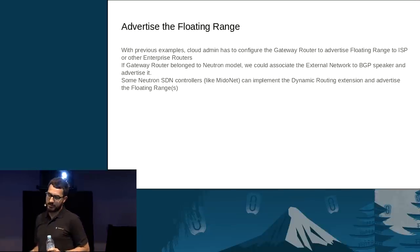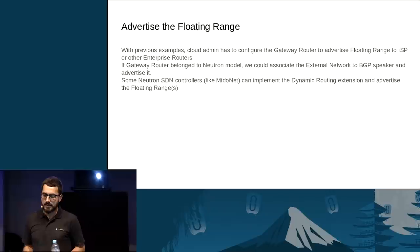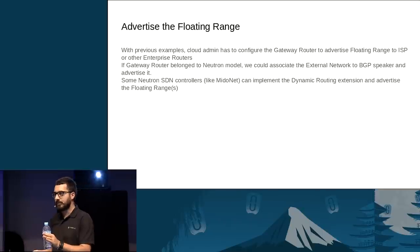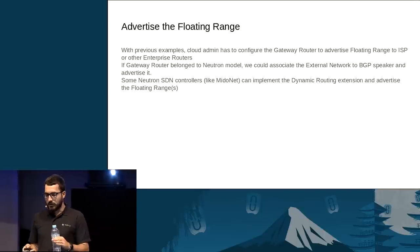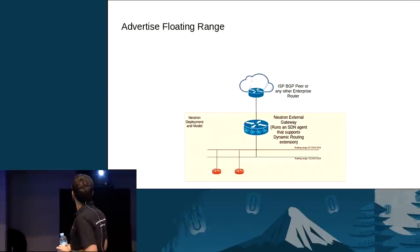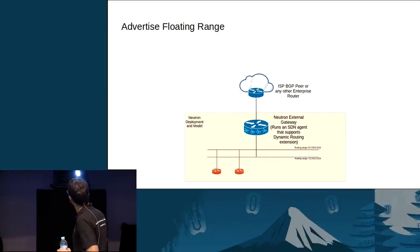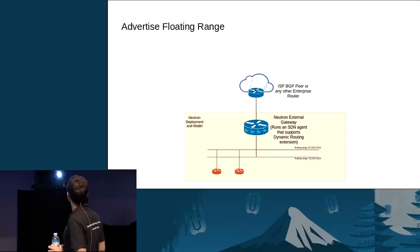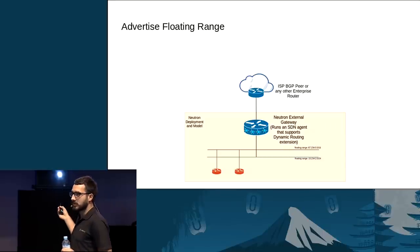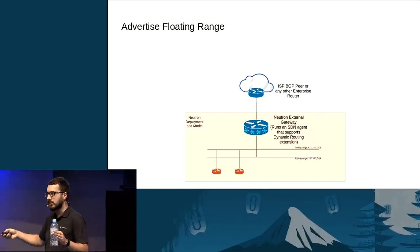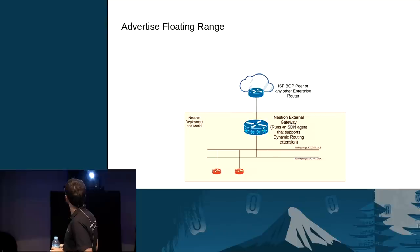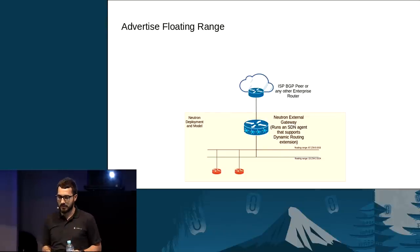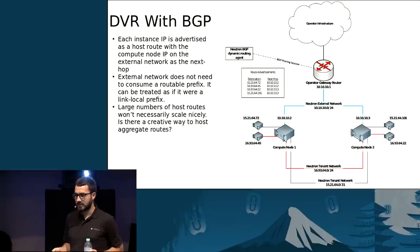Another use case, especially for Midokura and MidoNet, is defining a gateway router as a Neutron router so you can put a software-defined gateway router at the top of the external network. If you could do this, you could configure the BGP speaker so that an SDN controller implements dynamic routing and automatically advertises the floating range networks. If your enterprise grows or you want to extend your floating range, automatically people from outside the deployment can directly route packets to the Neutron deployment.